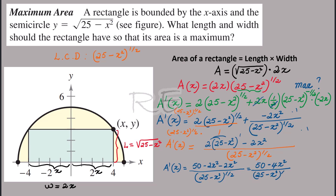The GCF between 50 and 4 is 2. We can write A prime of x as 2 times (25 minus 2x squared) divided by (25 minus x squared) to the one-half.